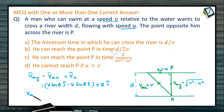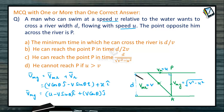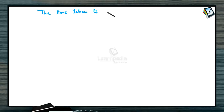The velocity of the man with respect to the river is V cosθ ĵ − V sinθ î, and the velocity of the river is U î. So the velocity of the man with respect to the ground is (U − V sinθ) î + V cosθ ĵ. Since the width D is along the ĵ direction, the time taken to cross the river is D divided by V cosθ.